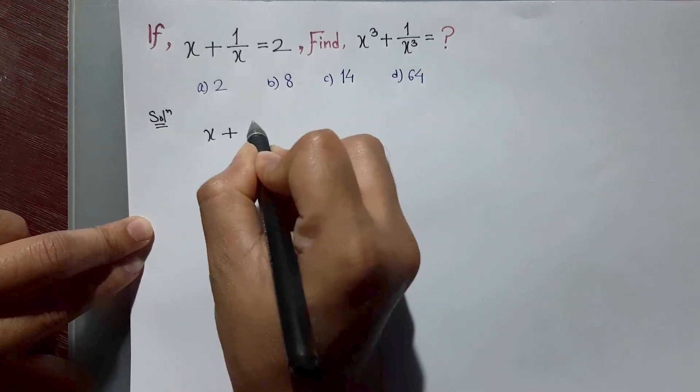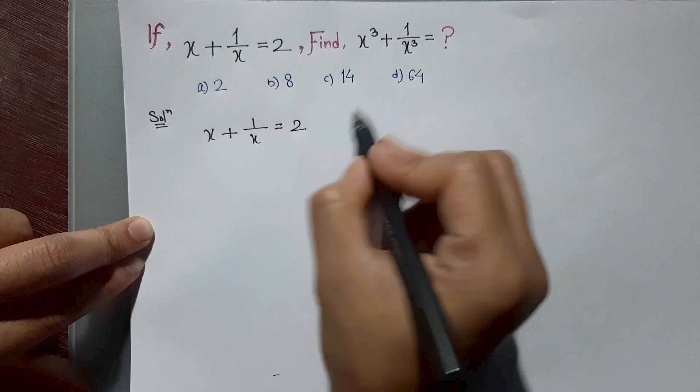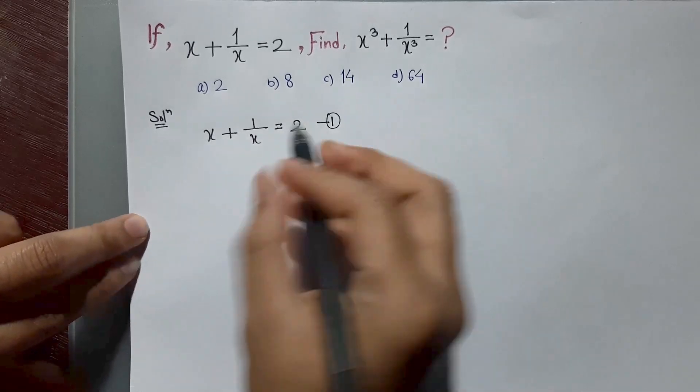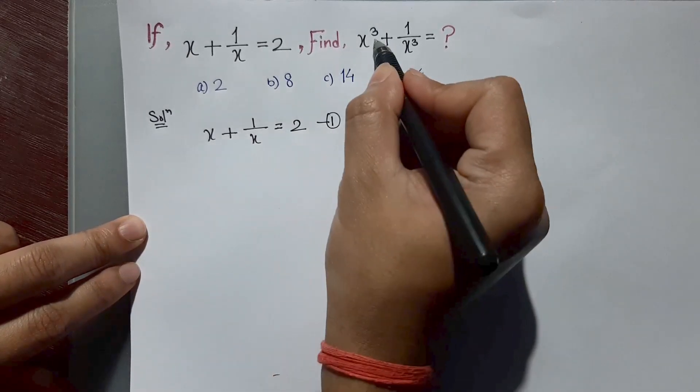x plus 1 by x is equal to 2. Let's give this equation number 1. Now, here is cube, so now we will cube the equation.